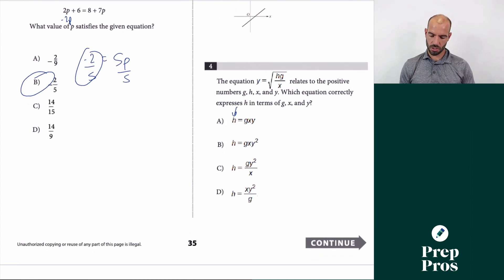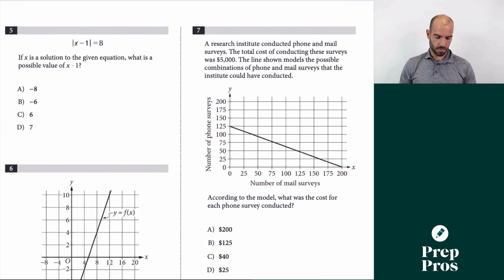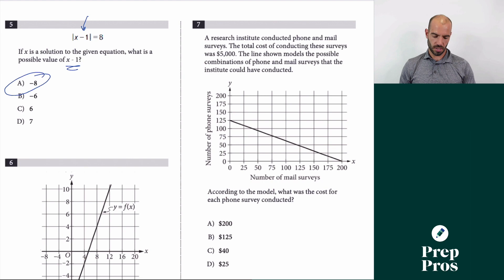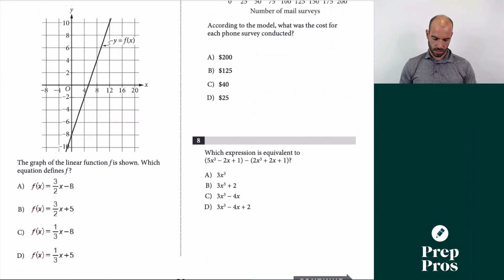Number 5: absolute value of x minus 1 equals 8. This has to equal positive or negative 8, so the answer is A. Number 6: we need to define the function. The y-intercept is at negative 8, so B and D are out. The slope rises 8 over a run of 6, which simplifies to 4/3 — wait, 8/6 simplifies to 4/3... the answer is A.